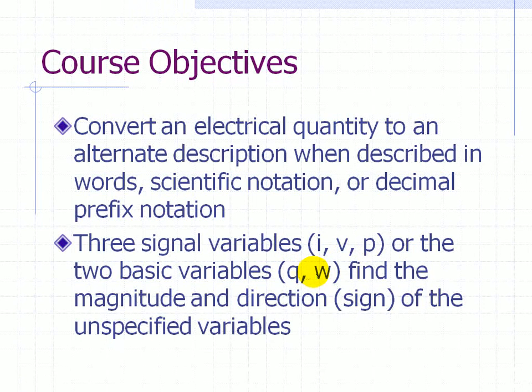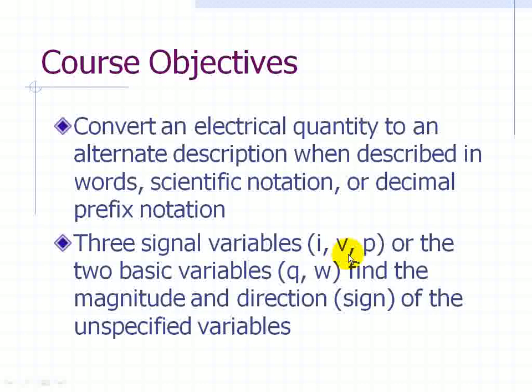And what we want to do in a circuit is to find the magnitude and direction, the sign, of unspecified variables, namely voltage or current.